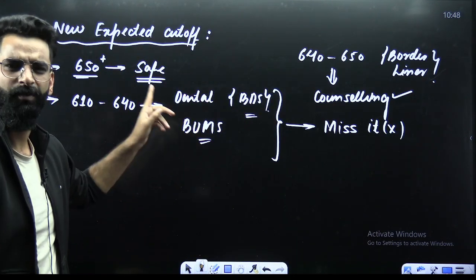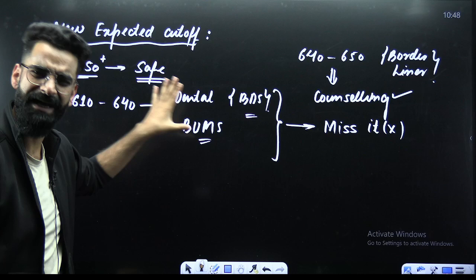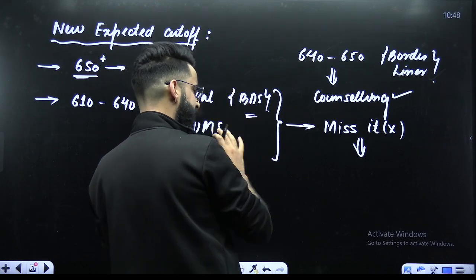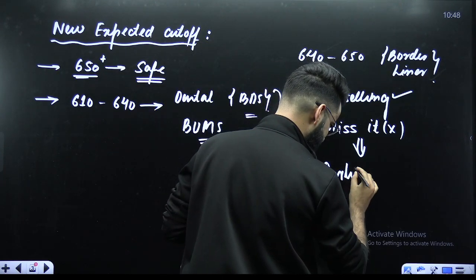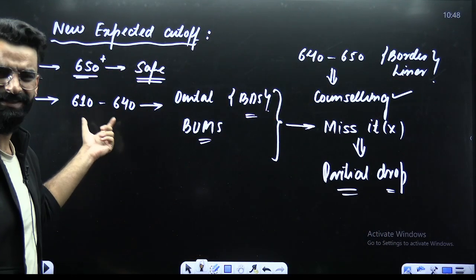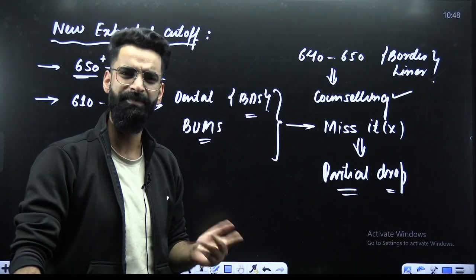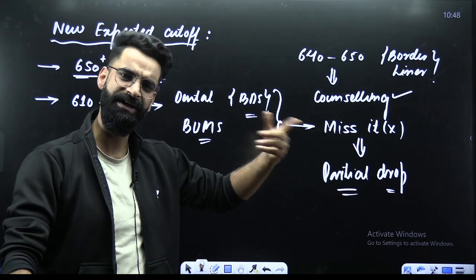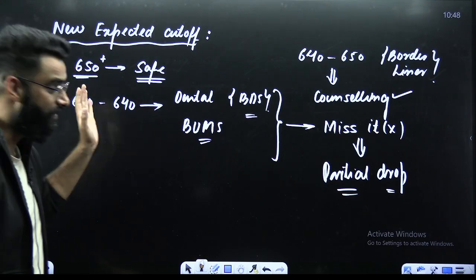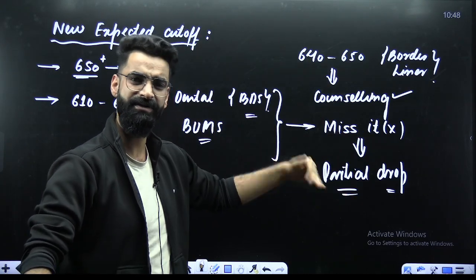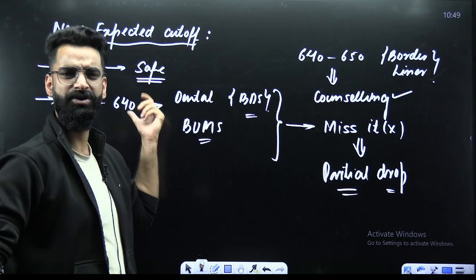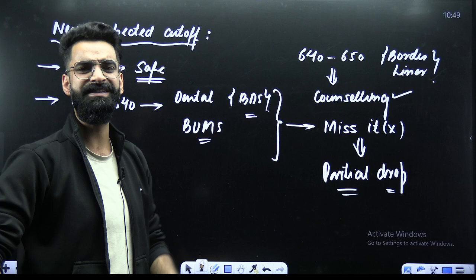Whatever course you are getting, whether BDS, whether BUMS, BAMS, whatever you are getting, just enroll into that. And simultaneously, what you can do is, after enrolling into that, after getting a college for the BDS or BUMS, you can take a partial drop. Basically, this term partial drop is meant for this category students only. Partial drop is particularly for this particular category. You guys just go to the college, just enroll into some course and you can take the partial drop and definitely you can kill it next year. Because there's a small push needed for you guys, just to make your 610 into 670, 610 into 690.